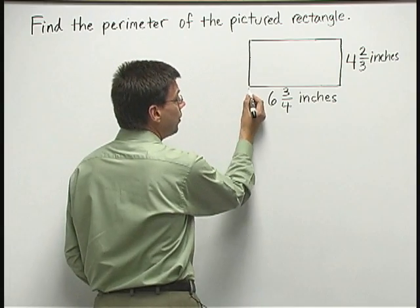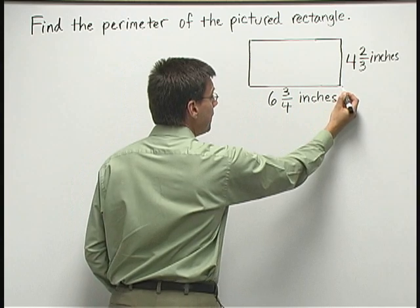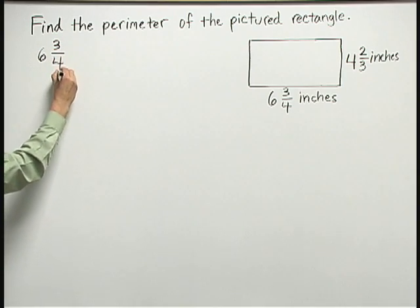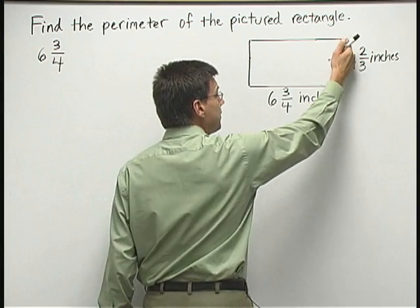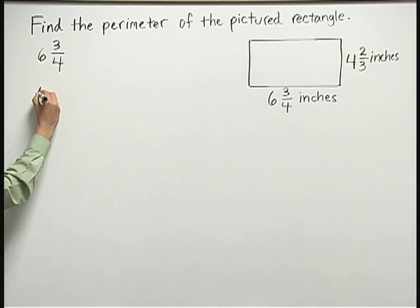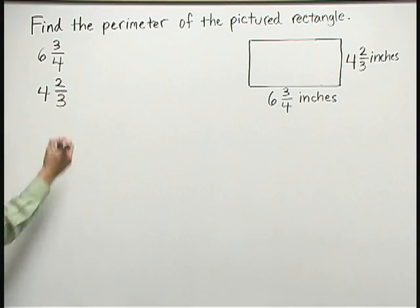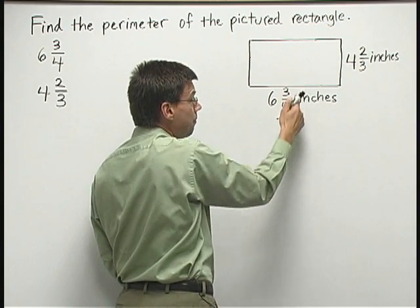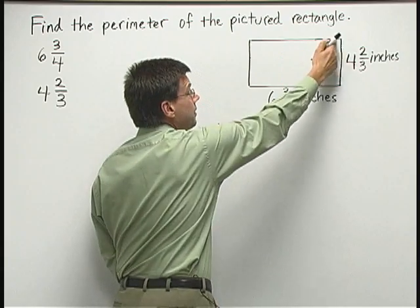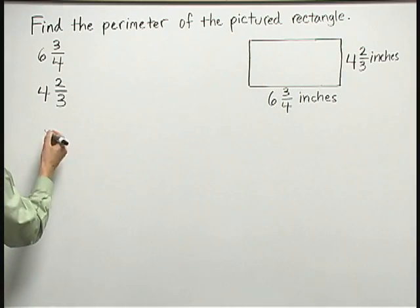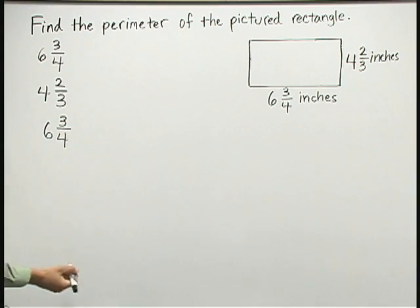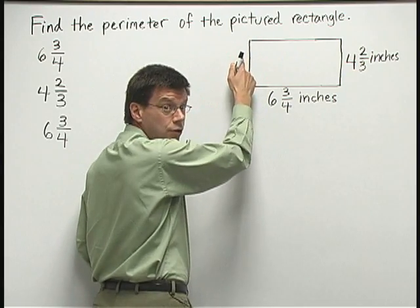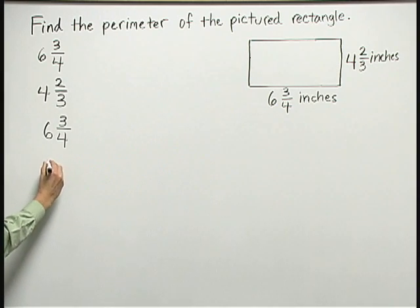My first side that I'm going to take here is along the bottom, six and three-fourths inches. And then I'll go up this side, that's four and two-thirds inches. And then we'll go across the top. Now across the top is a side that has the exact same measure as the bottom, that's another six and three-fourths inches. And then we come down this side. This side has the same measure as the four and two-thirds inches, so we have another four and two-thirds.